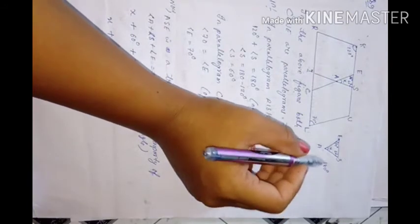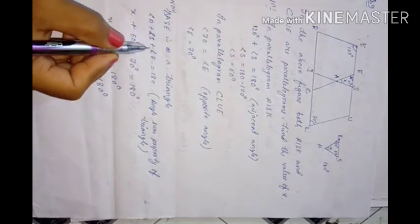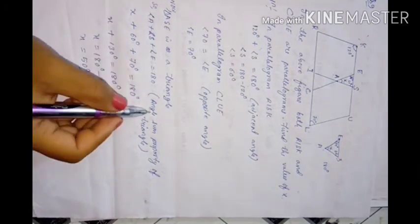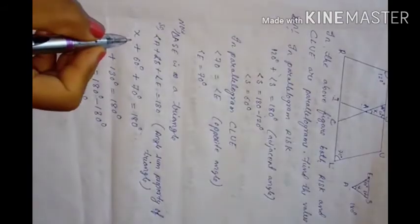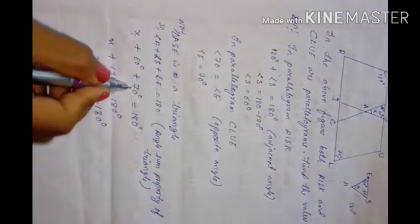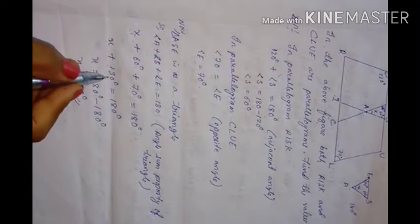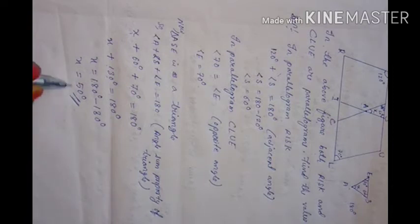By the angle sum property of a triangle, angle A plus angle S plus angle E equals 180 degrees. So x plus 60 plus 70 equals 180, giving x plus 130 equals 180, so x equals 50 degrees.